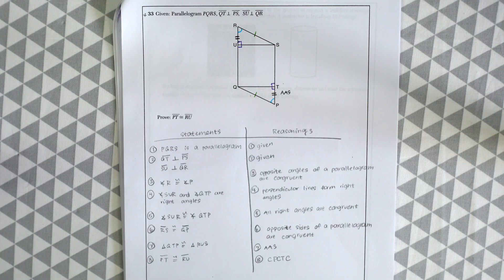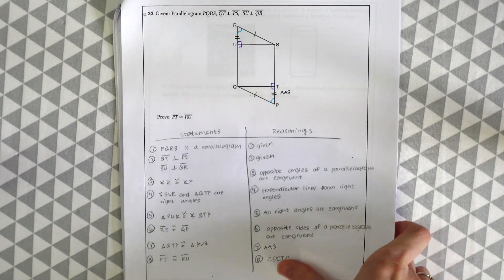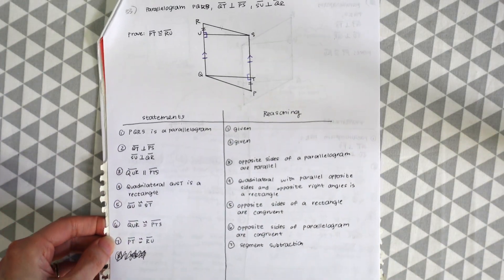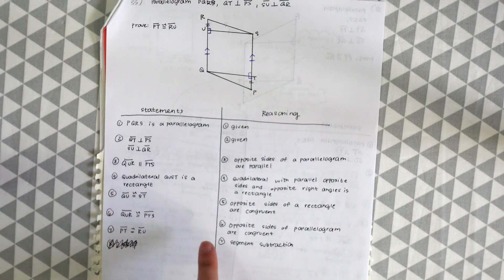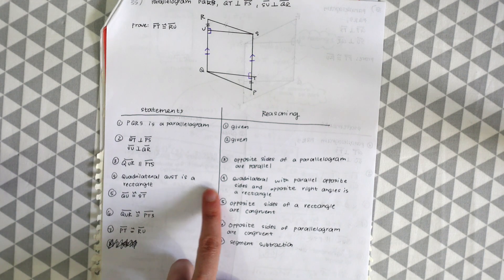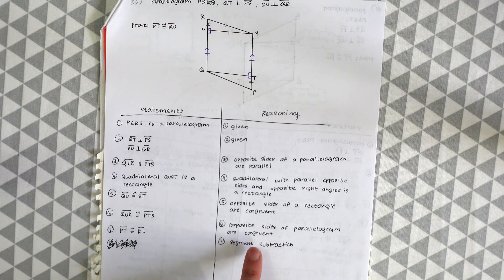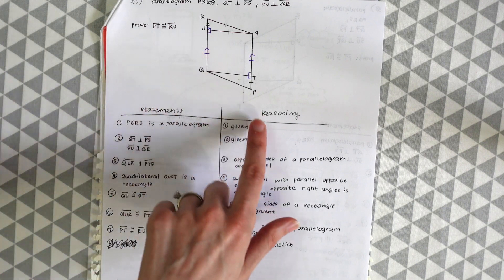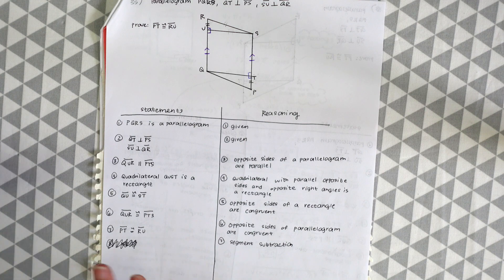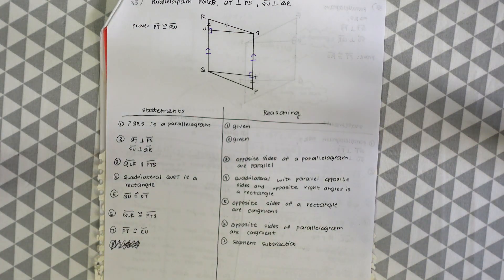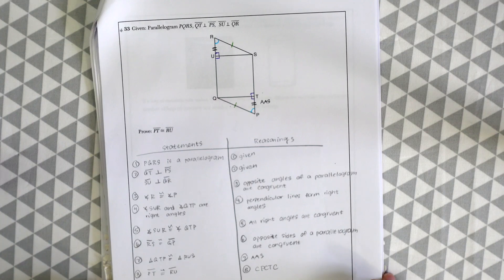The hard thing about proofs is that there are different ways to prove things. So just because you wrote something else doesn't mean you're wrong. Here's another method that proves that QRST is a rectangle using parallel opposite sides and opposite right angles forming a rectangle. Then, because of that, they use segment subtraction to prove that PT is congruent to RU. I always like to look for congruent triangles because I think that's an easy way to go.